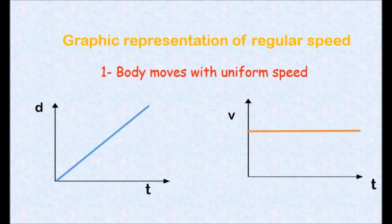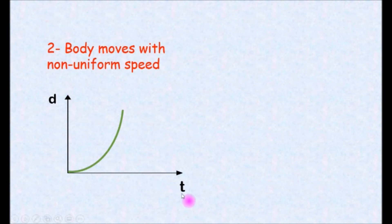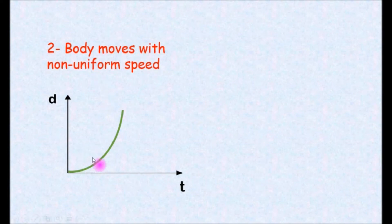Let's see what the graph looks like when the body moves with irregular speeds. When the body moves with non-uniform or irregular speed, it covers unequal distances at equal periods of time, or equal distances at unequal periods of time. So the graph of a body moving with non-uniform speed is a curved line or zigzag line starting from the origin.